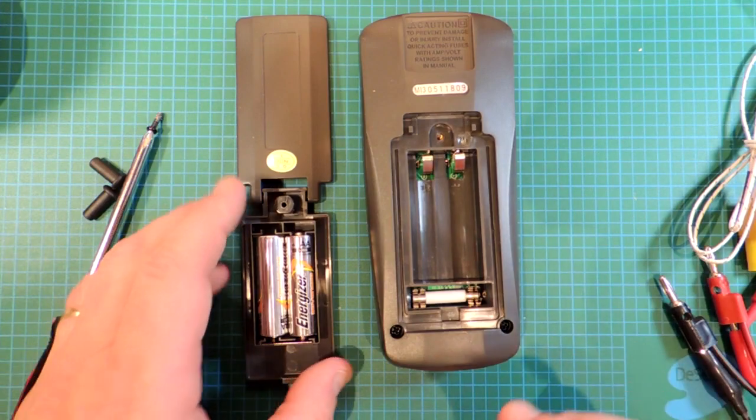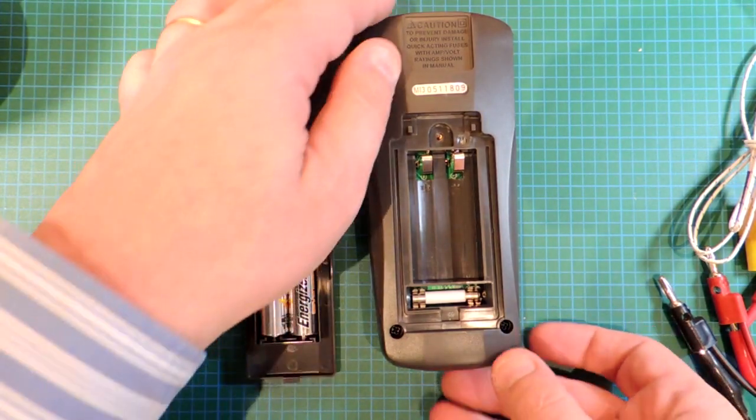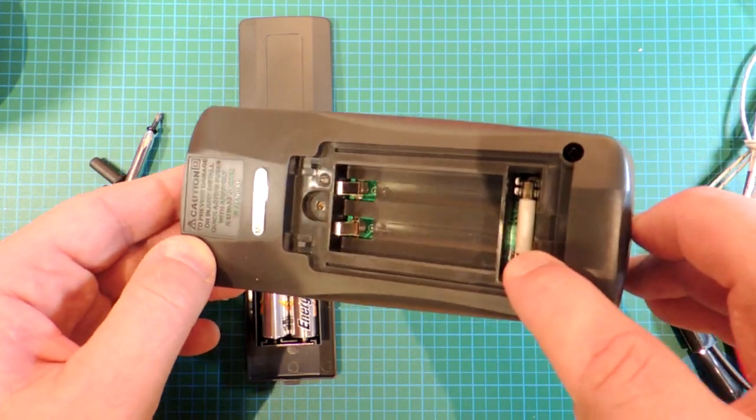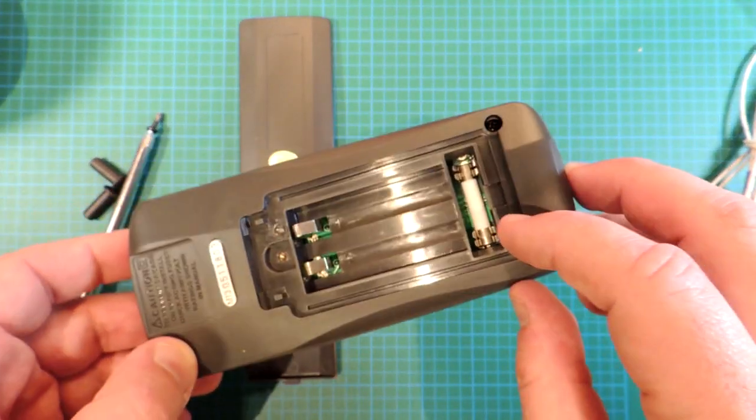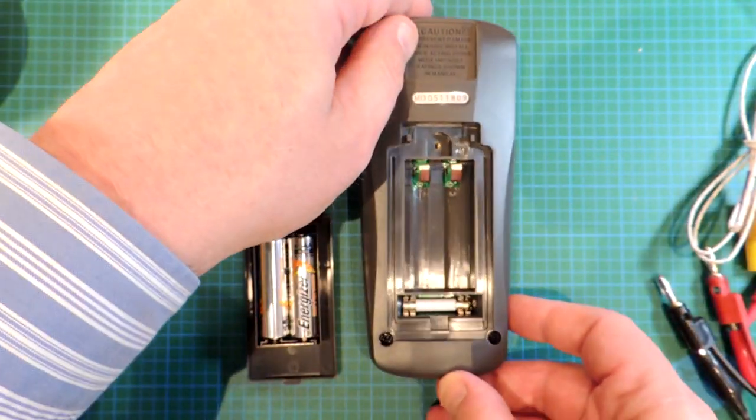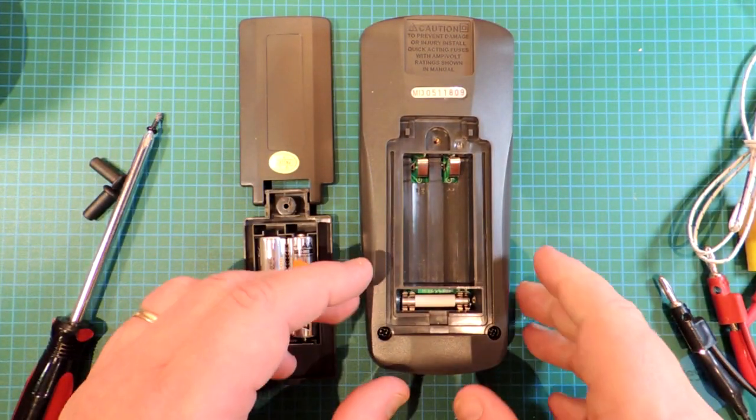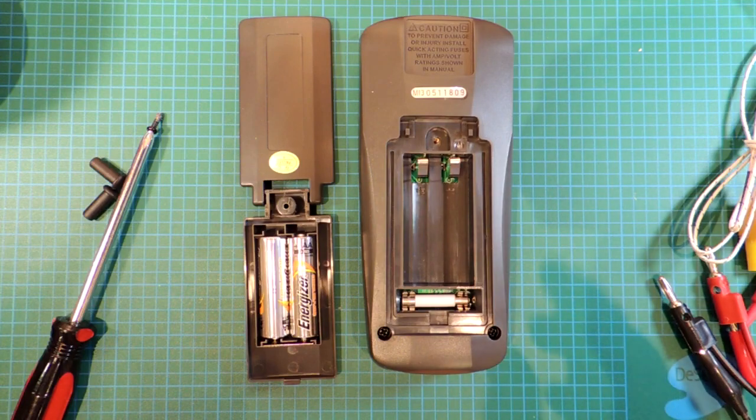So the first thing to note when I've got the back off, it's a couple of double A's powered up. That's nice. And you can see, actually, the fuse for the current rating can be replaced without removing further parts of the body. That's nice, obviously, as you expose all your electronics. You always have the chance of damaging things.